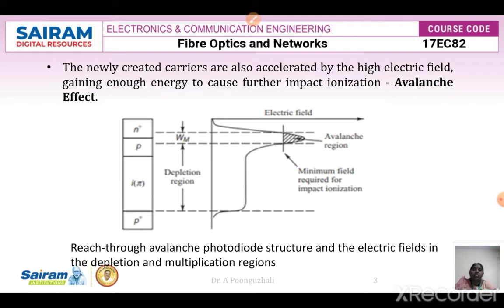When one electron hits another electron, that electron gets freed from the covalent bond and we have two electrons. These two electrons gain enough energy and collide with neighboring atoms, releasing two more electrons, giving us four electrons. Four will be multiplied to eight, and eight to sixteen. This process, driven by impact ionization, is called the avalanche effect.